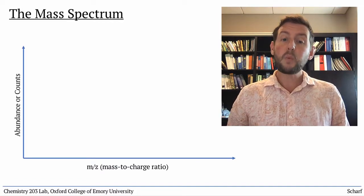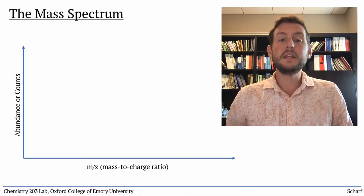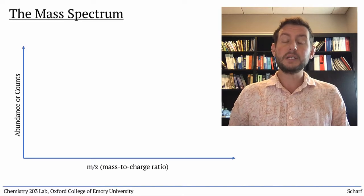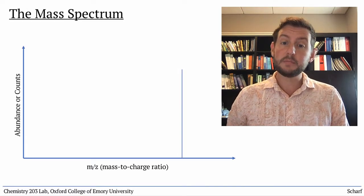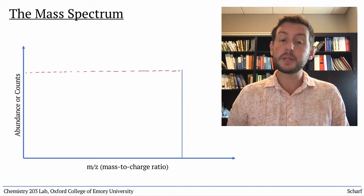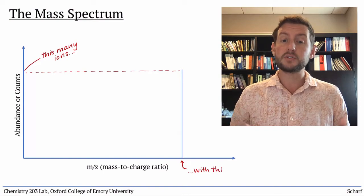The y-axis is abundance, or counts, which just means the number of ions to reach the detector. A peak in the spectrum tells you that a certain number of molecular ions with a particular mass were present in the original sample.